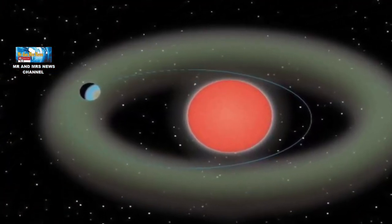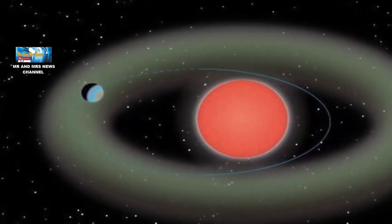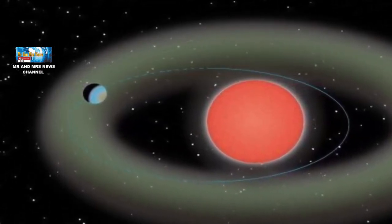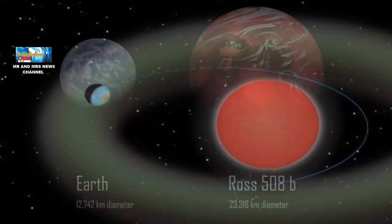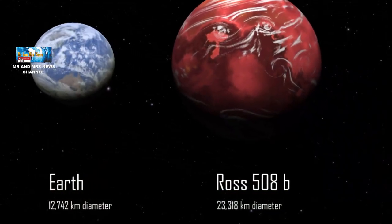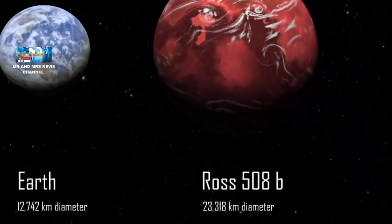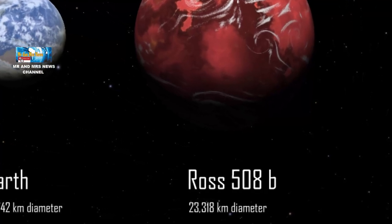Bintang ROS-508 sebagai bintang induk planet ROS-508D adalah tipe bintang katai merah yang redup. Cahaya bintang tidak panas, setidaknya planet yang layak untuk kehidupan harus sangat dekat ke bintang.